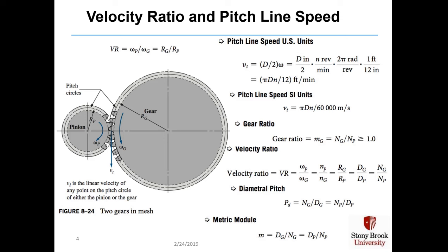Recall from Chapter 8 we discussed all of the kinematics of the gears. We had the pitch line speed formula, the gear ratio, and the velocity ratio which can be calculated in five different ways. We also had an important factor known as the diametral pitch, which can be calculated from the number of teeth in either the gear or the pinion divided by its diameter. We're going to be using all of these formulas when we study forces.